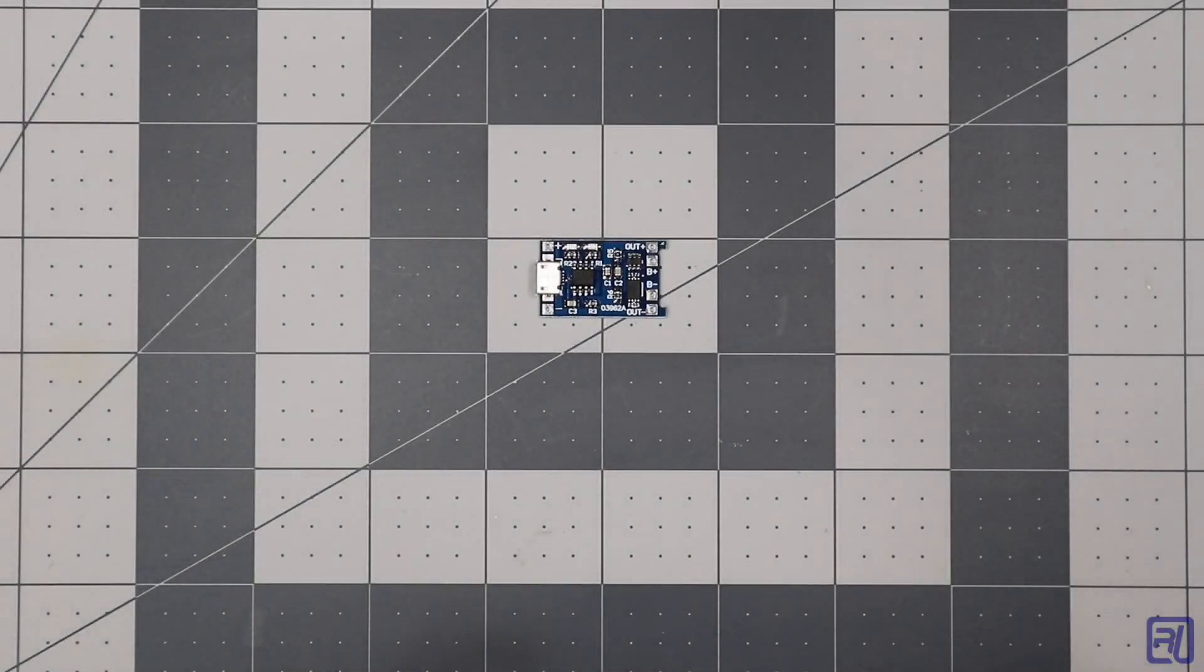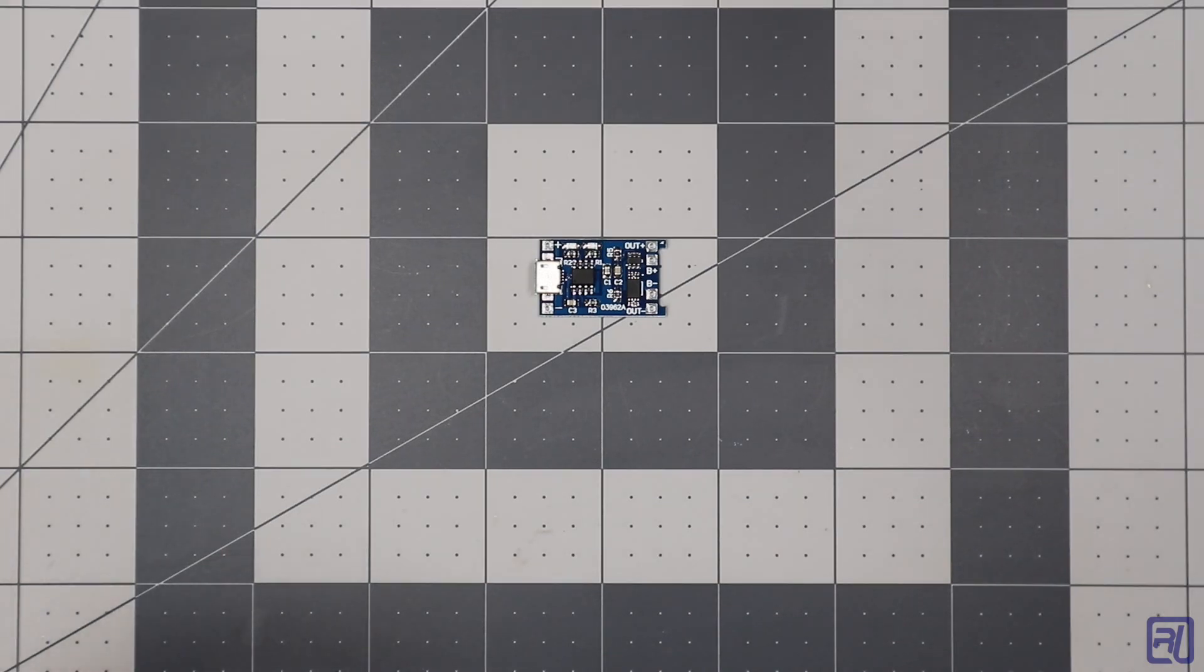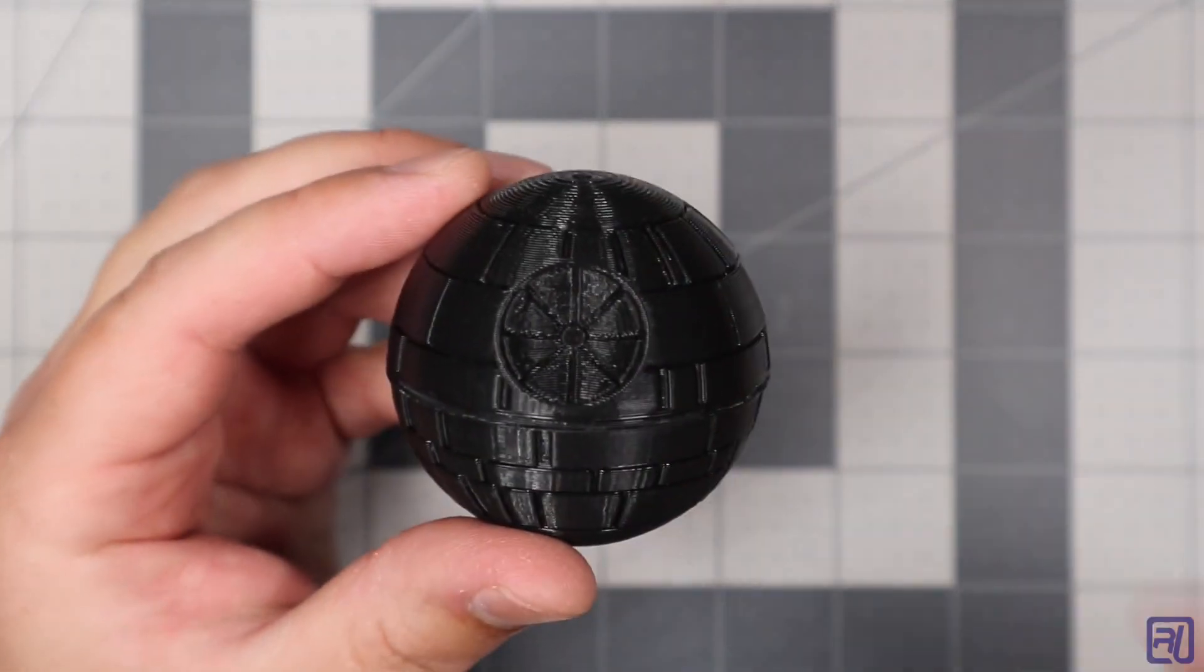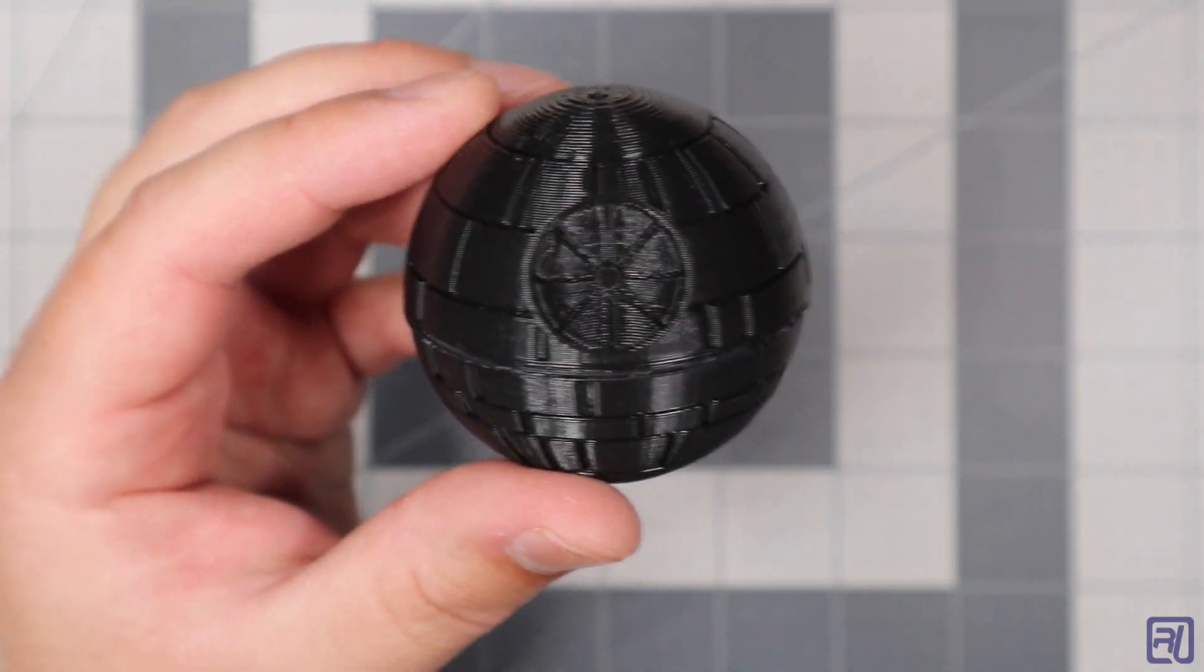So what kind of projects can you build with this charger board? Pretty much anything. Here's an example of a project that I used the TP4056 charger board in. It's a musical Death Star. It plays the Imperial March tune whenever you get a magnet near it.